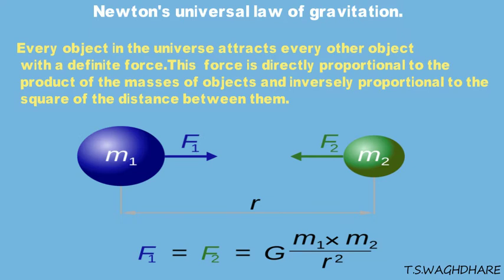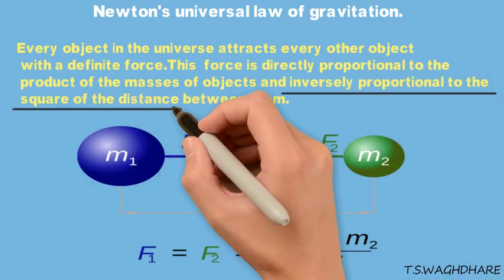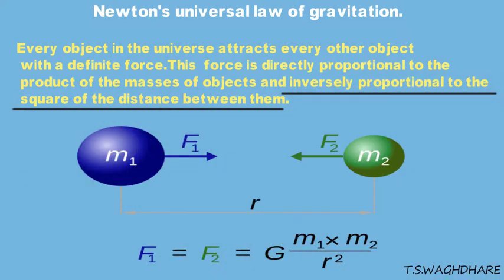This force is directly proportional to the product of the masses of the two objects and inversely proportional to the square of the distance between them. Now, we just need to focus on this part, that the force is inversely proportional to the square of the distance between them.